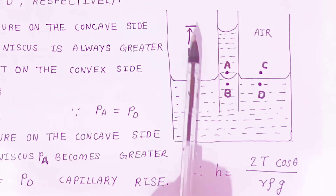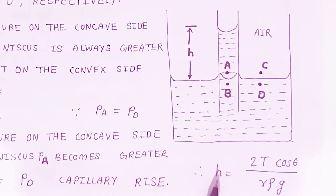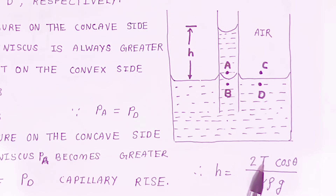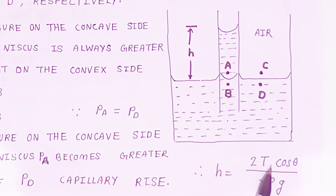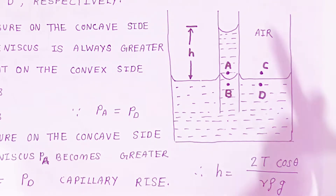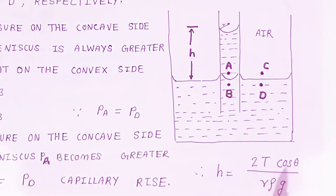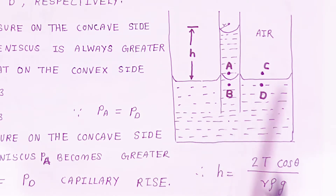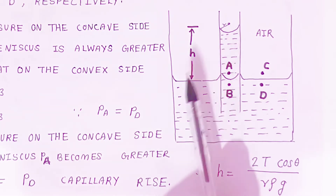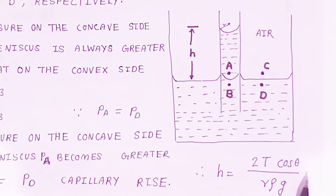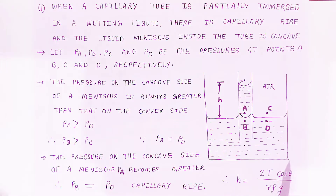To find out the height h of capillary rise, the formula is: h = 2T cosθ / (r ρ g), where T is the surface tension, θ is the angle of contact, r is the radius of the capillary tube, ρ is the density of the liquid, and g is the acceleration due to gravity.